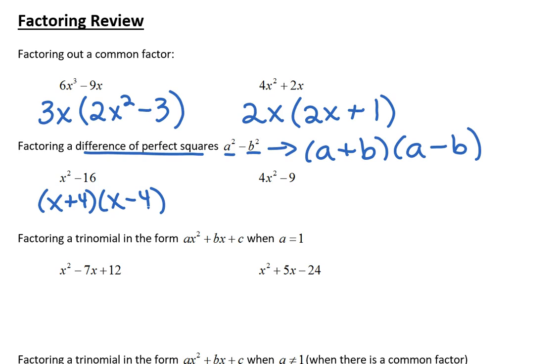On the next one we have 4x²-9. When a is something other than 1, you want to look and see if it factors out. Since 4 doesn't divide evenly into 9, that's not going to work, so we say what's the square root of 4x²? It's 2x, and the square root of 9 is 3, so we're going to have a +3 and a -3.